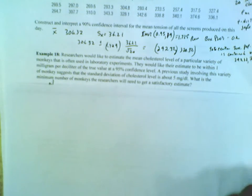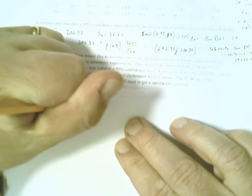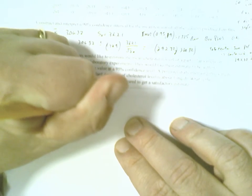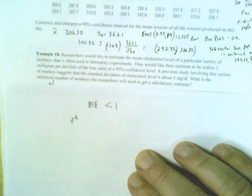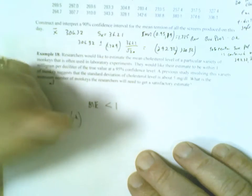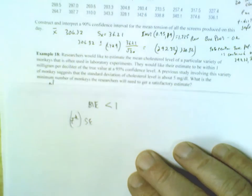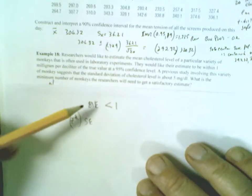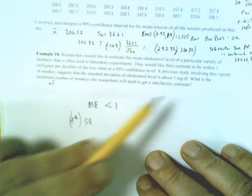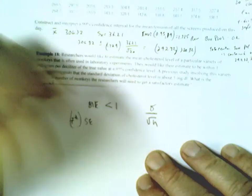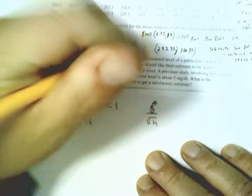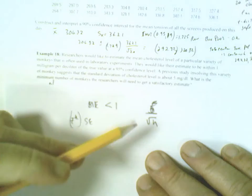We want our margin of error - I'm going to write ME - less than 1. Our margin of error is a z-score multiplied by our standard error. In this case, our standard error will be our sigma value, which is 5, divided by the square root of n.